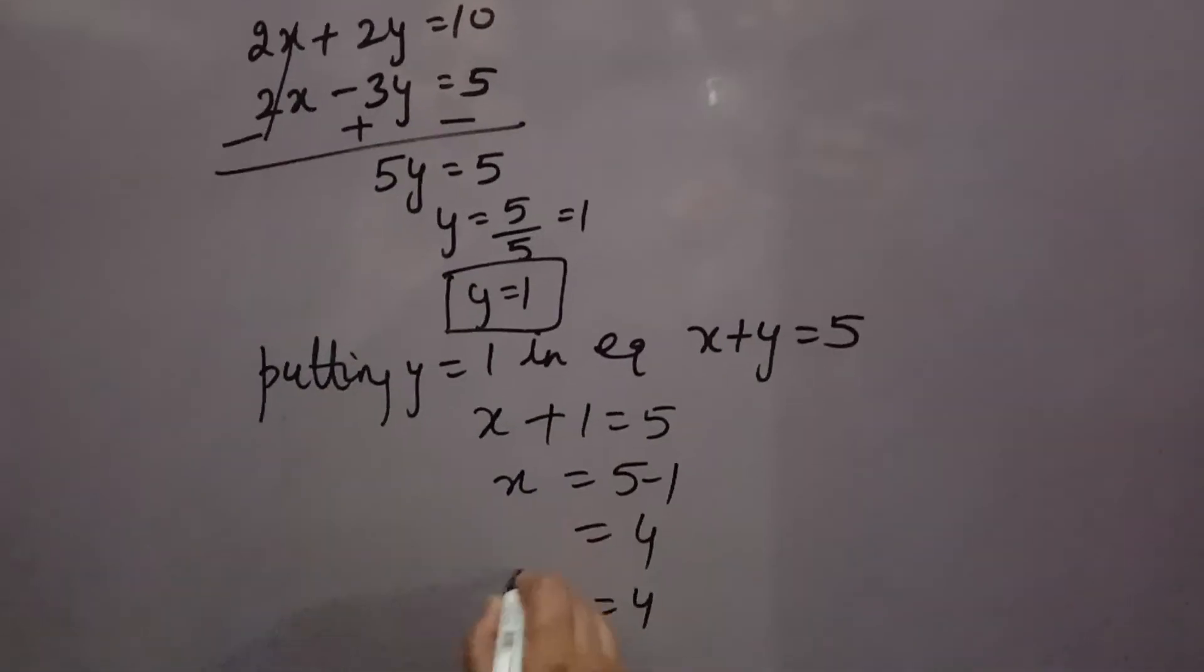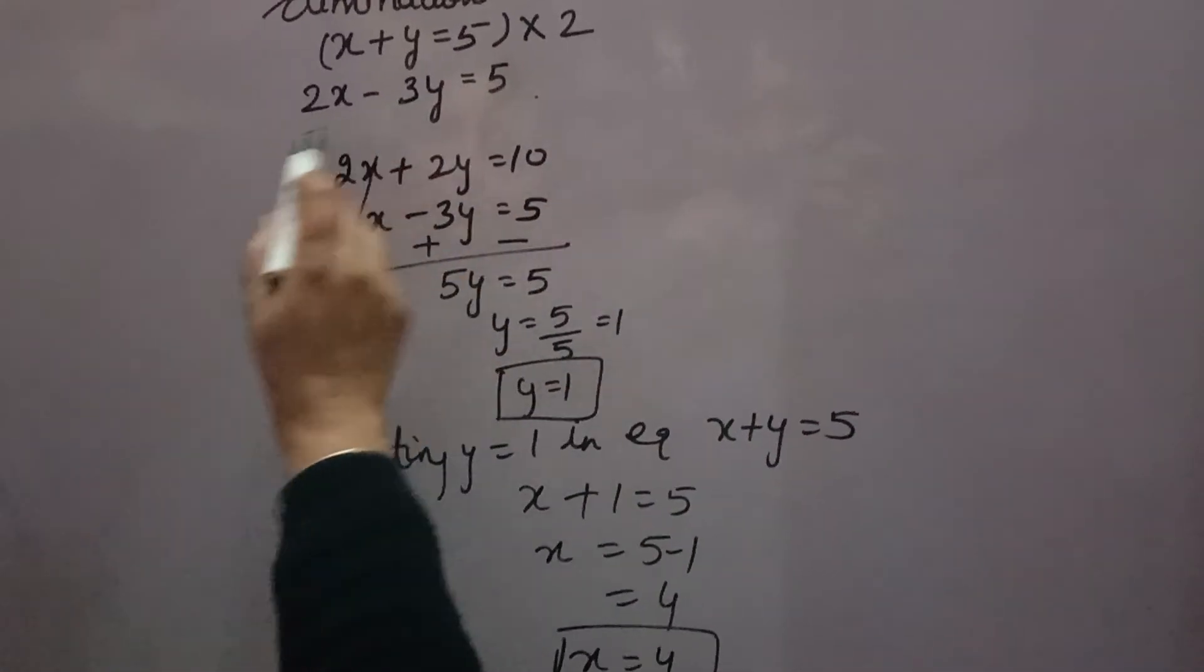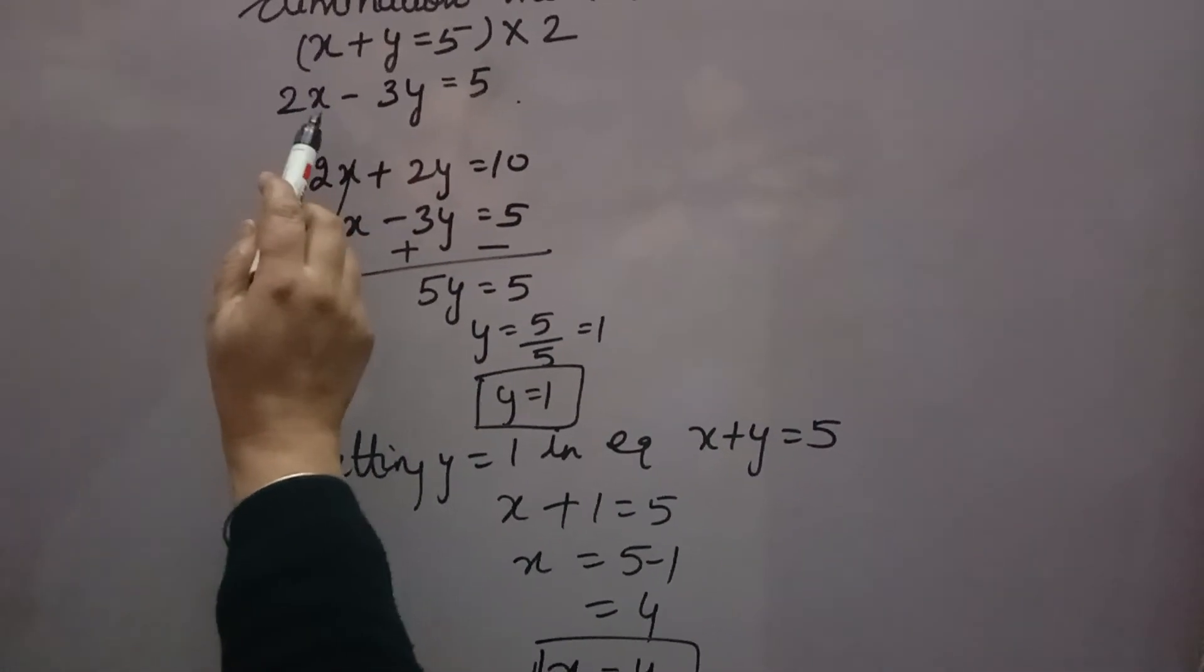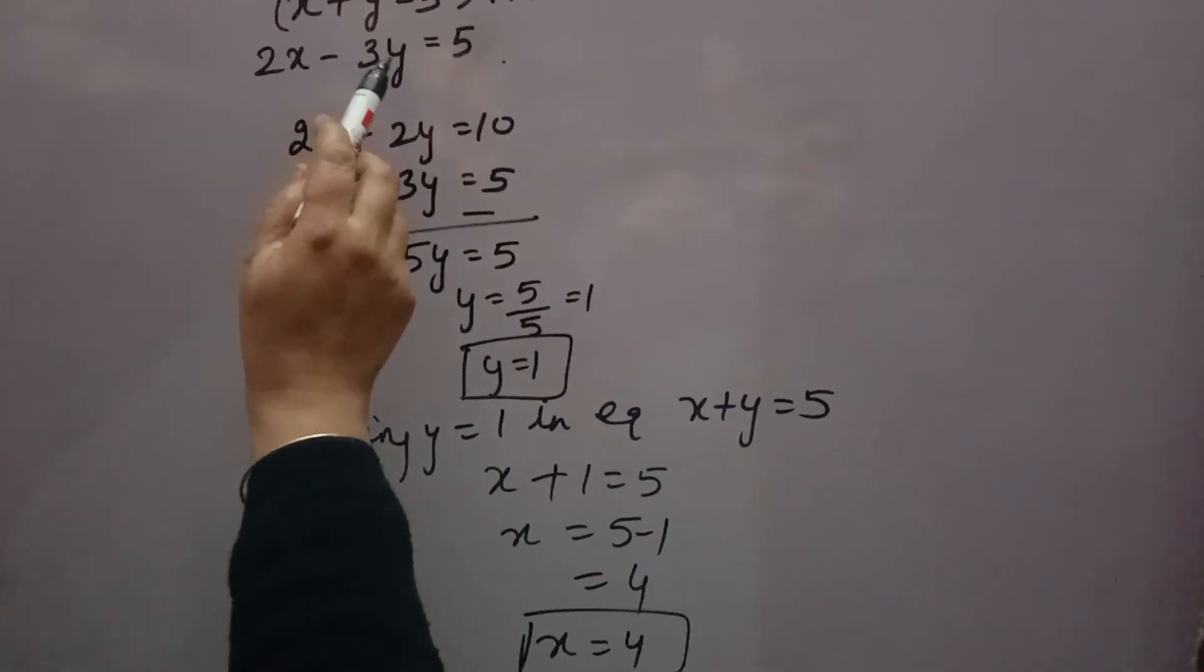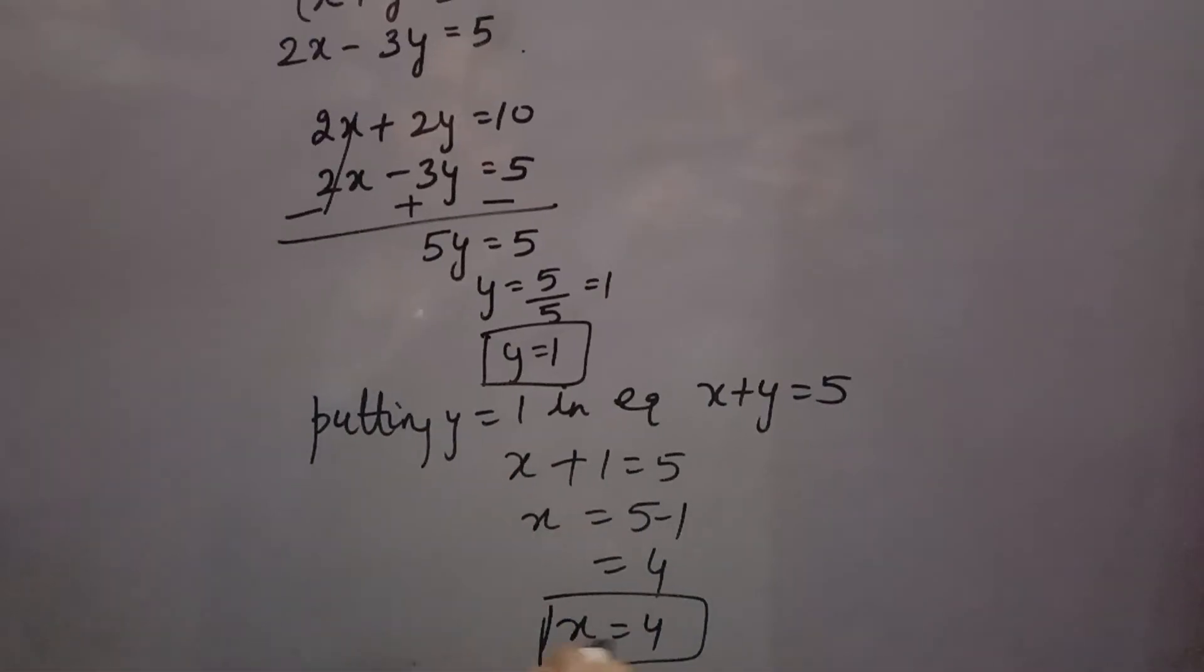So, x is equal to 4, and y is equal to 1 is the answer. You can check by putting in this equation. 2 into x, 2 into 4, 8. Minus 3 into 1, 3. 8 minus 3, 5 coming. That means your answer is correct.